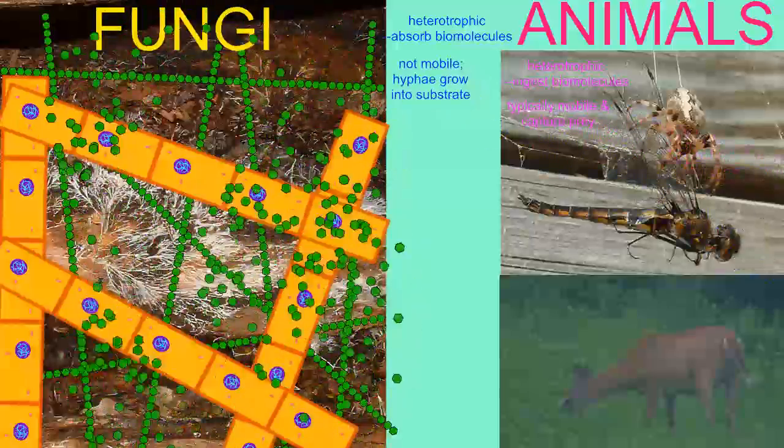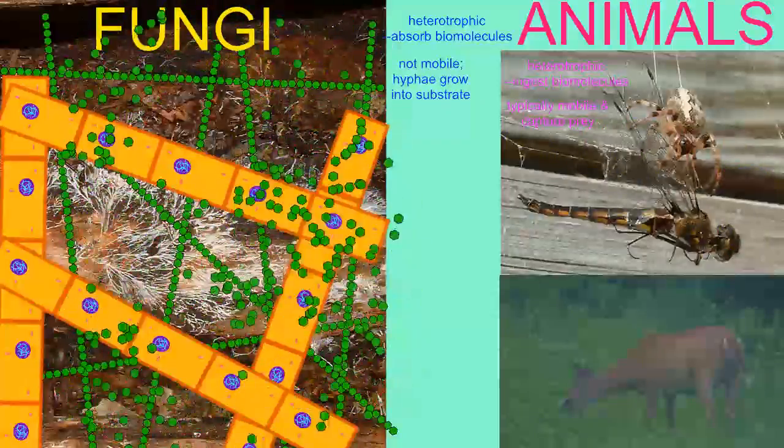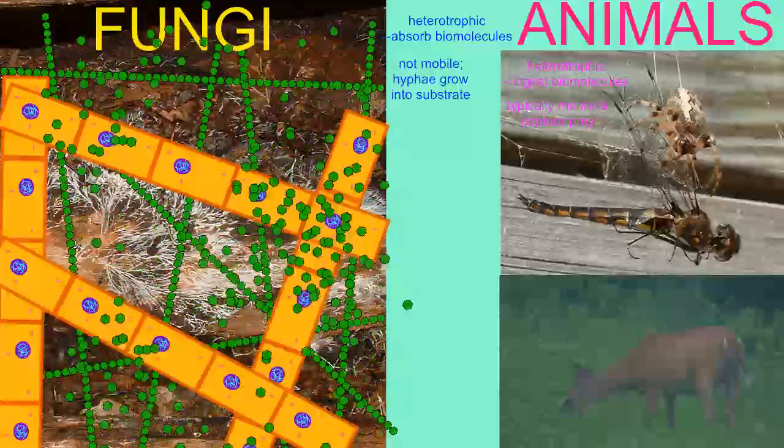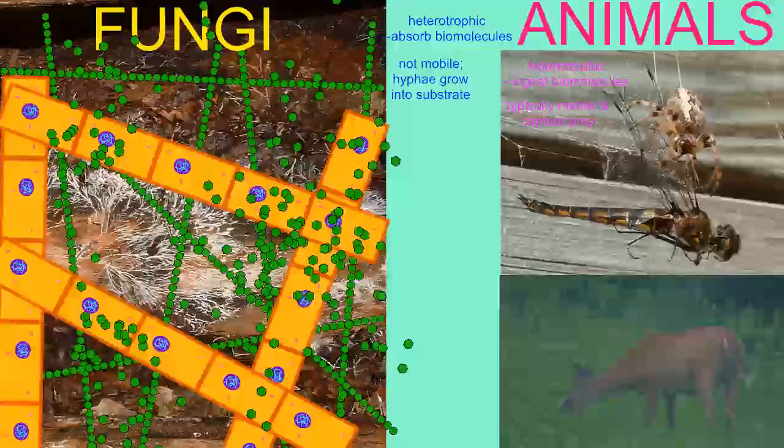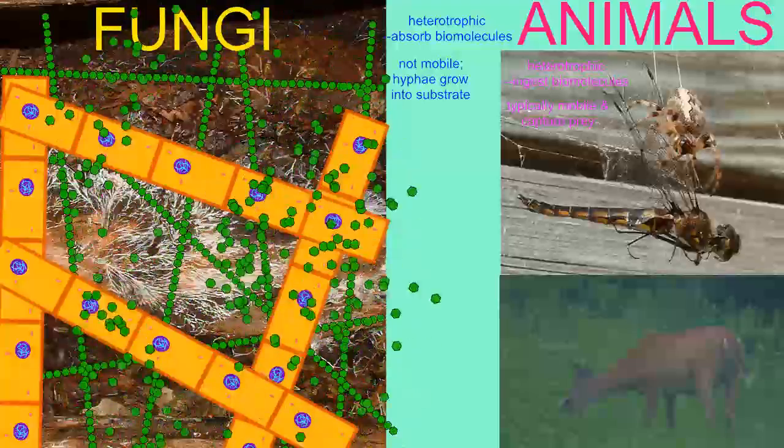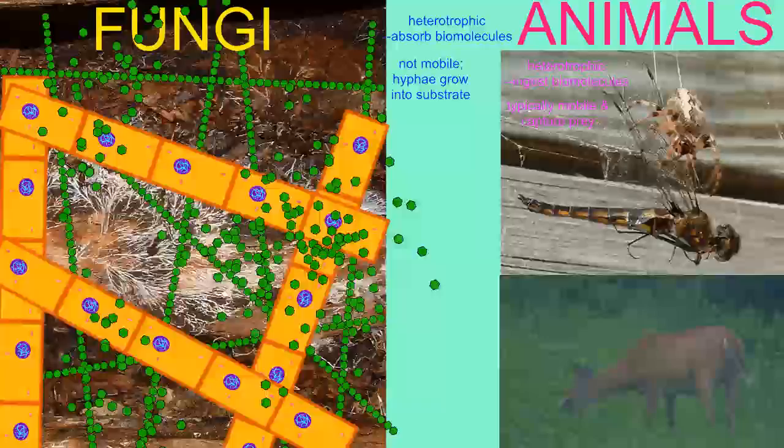Animals are mobile, many trapping their prey, while fungi must grow into their prey because they are not mobile except for the most primitive ones which can move through flagella.